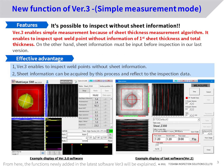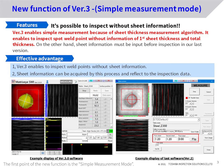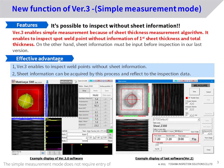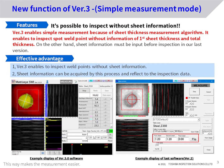From here, the functions newly added in the latest software version 3 will be explained. The first new function is the simple measurement mode. The simple measurement mode does not require entry of sheet thickness information in advance, making the measurement easier. This makes it possible to cope with sudden inspections at your shop or production lines when there is no sheet thickness information available.